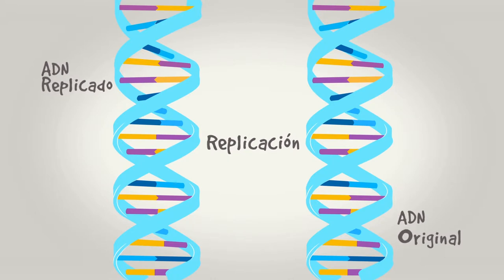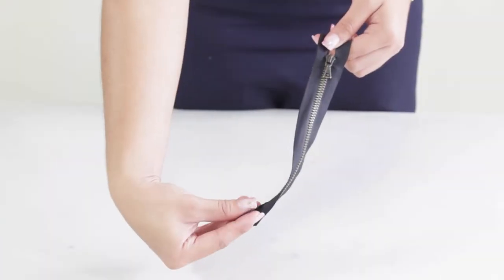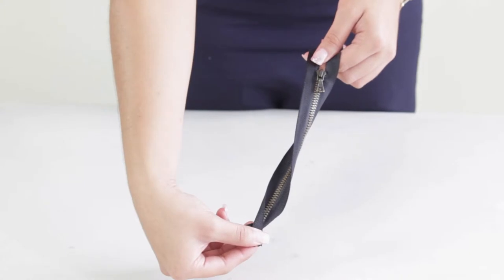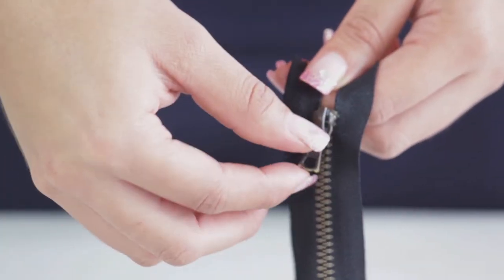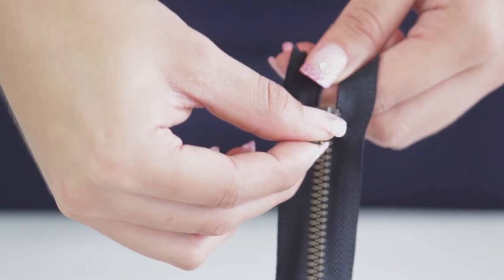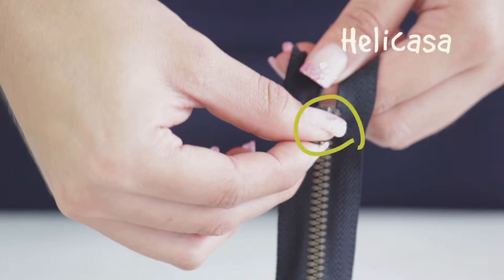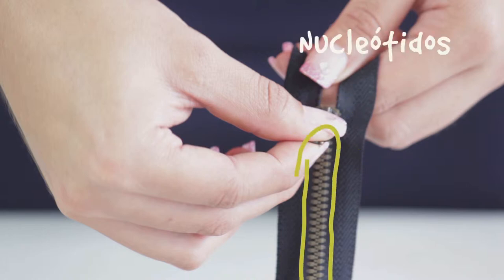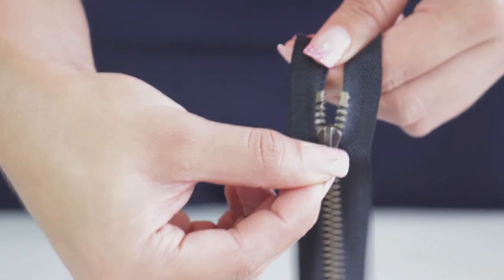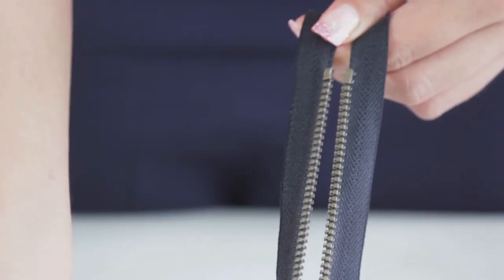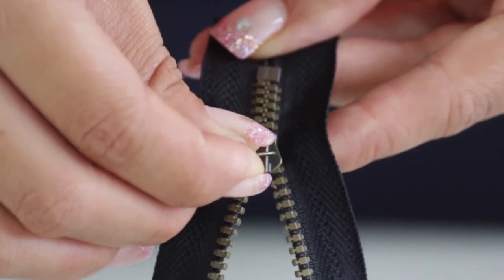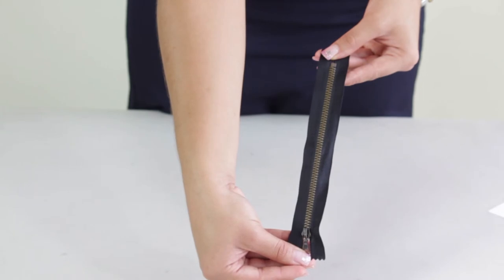Si bien es cierto que la replicación es muy compleja, puede explicarse sencillamente de forma general utilizando un zíper. Si se enrolla sobre sí mismo, como se observa, se obtiene un modelo sencillo de la doble hélice del ADN. Al desenrollarlo, la mano representa las enzimas que desdoblan la molécula. Luego, el carro del zíper simula la helicasa, enzima que rompe los puentes de hidrógeno que unen a los nucleótidos, que en este ejemplo son los dientes del zíper, para permitir la separación de ambas cadenas y así las demás proteínas copiar la información encriptada en ellas.